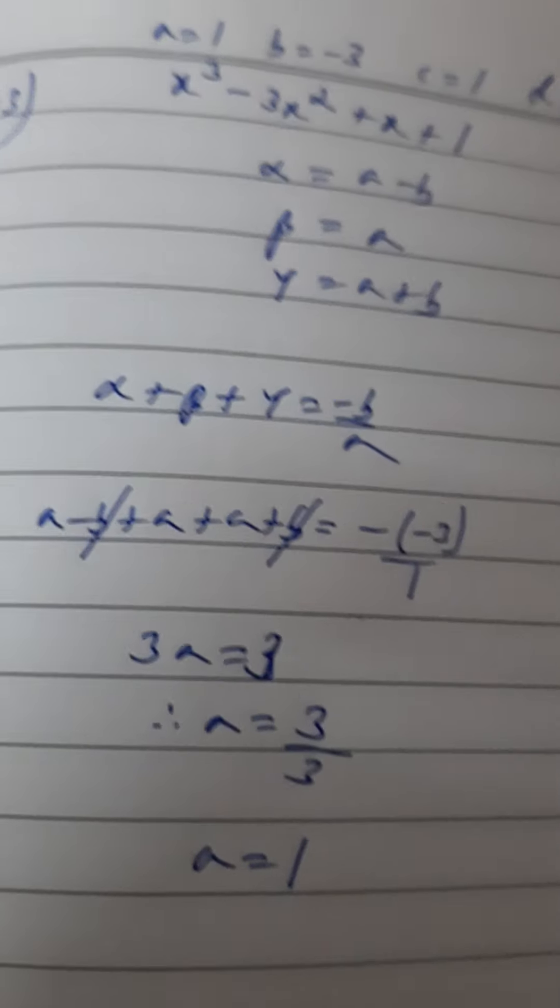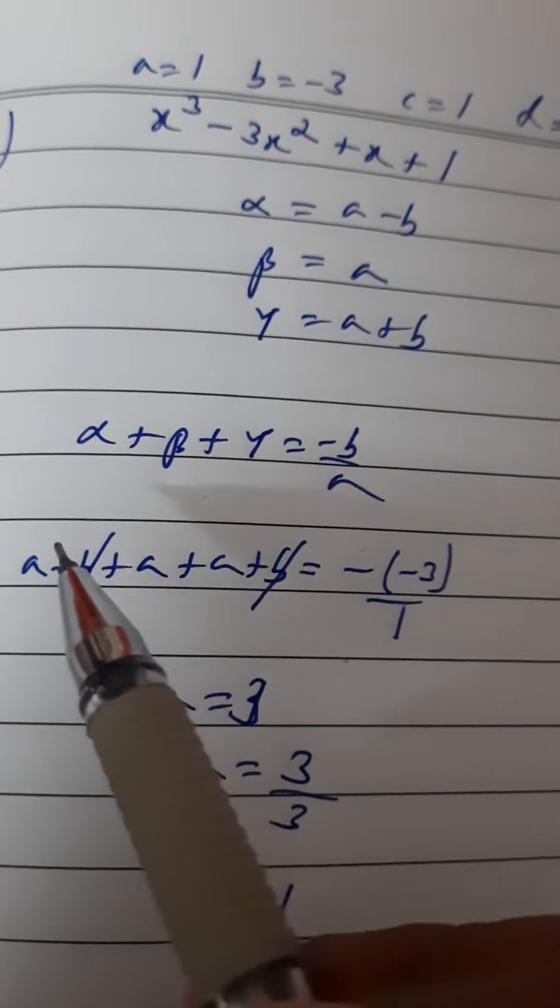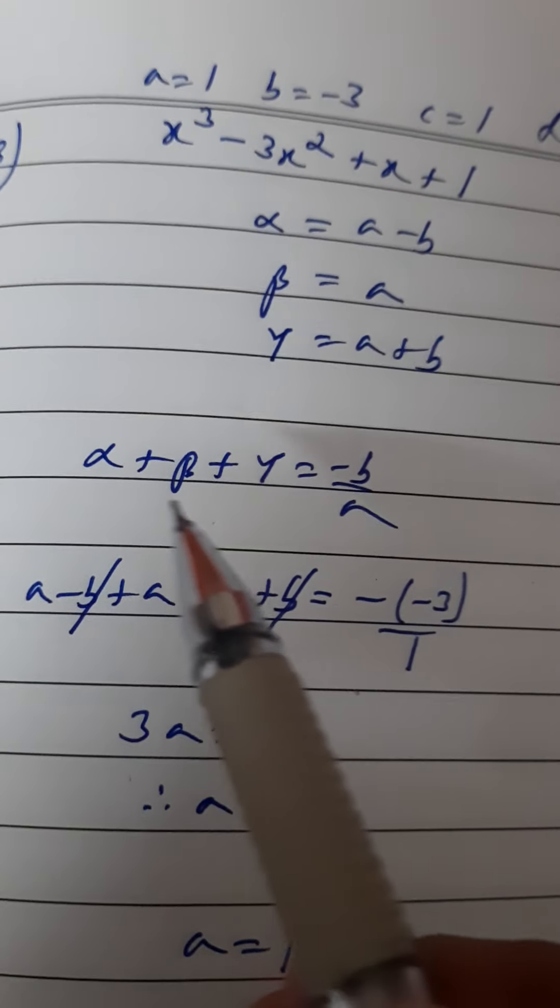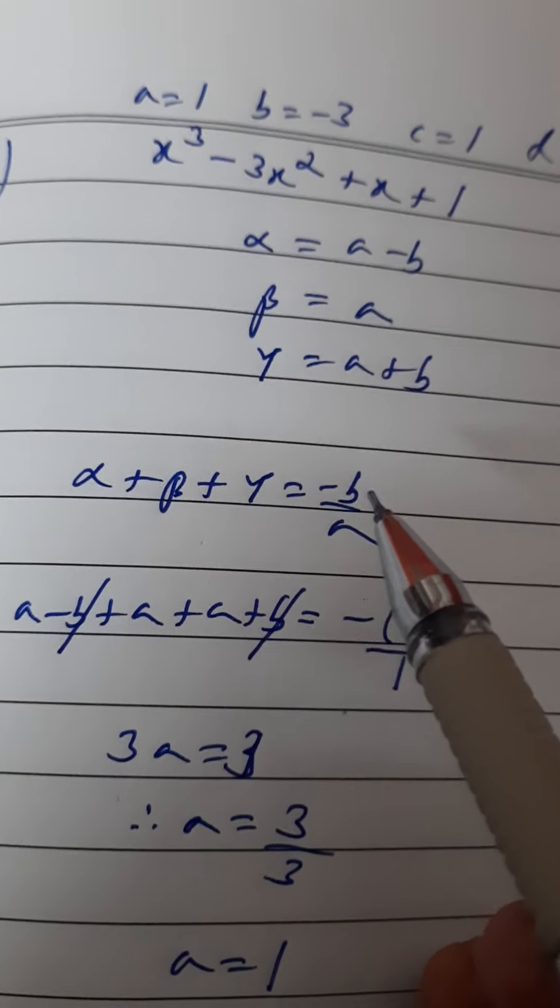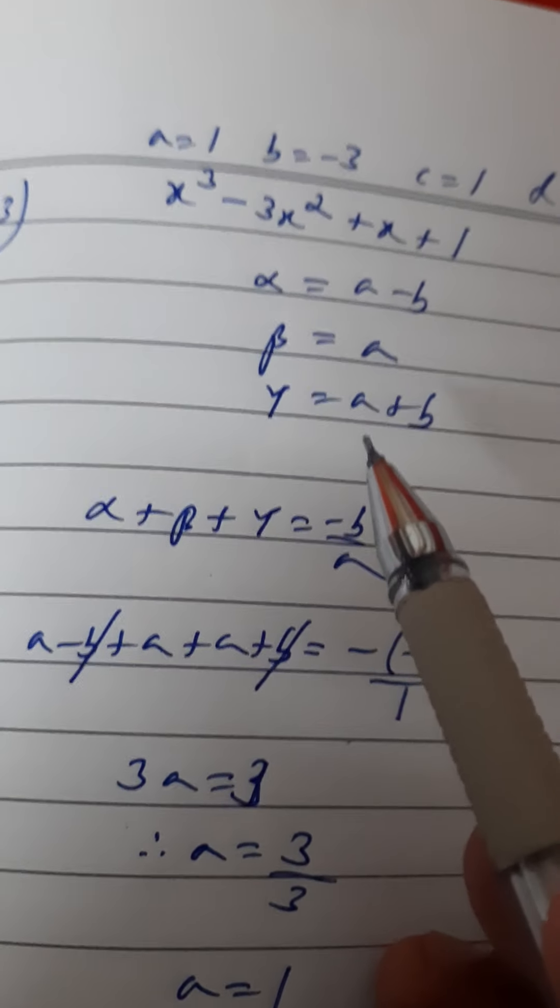So what are the values of a and b? Now we'll use the verification formula. If you remember question number one, we had used three formulas. We can use the first one: sum of zeros, α + β + γ = -b/a. So what is alpha, beta, and gamma? They are these values.